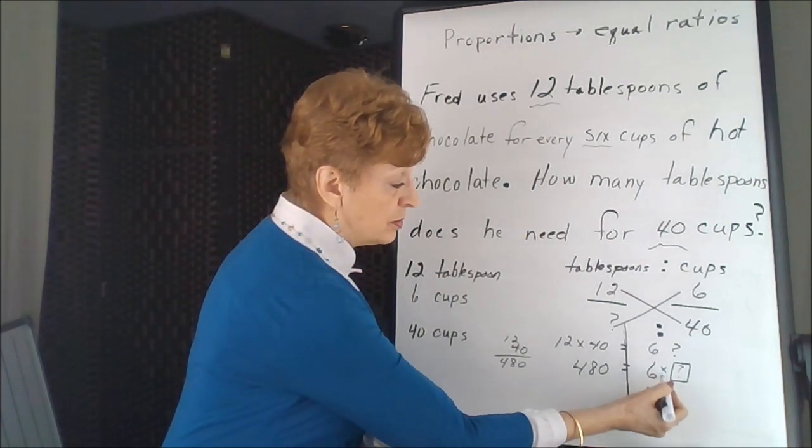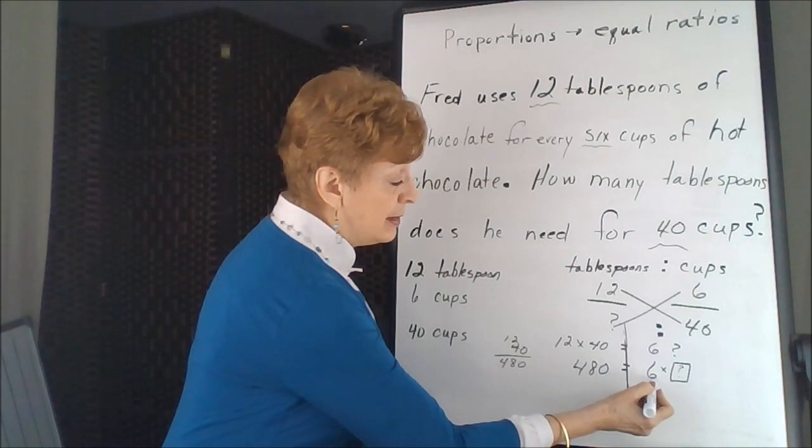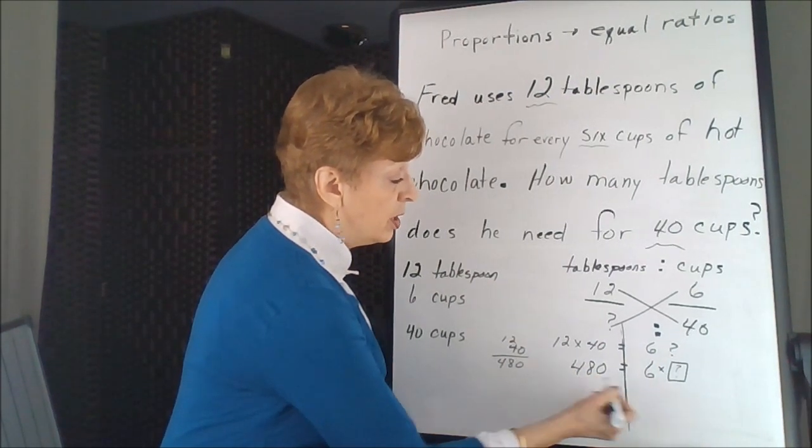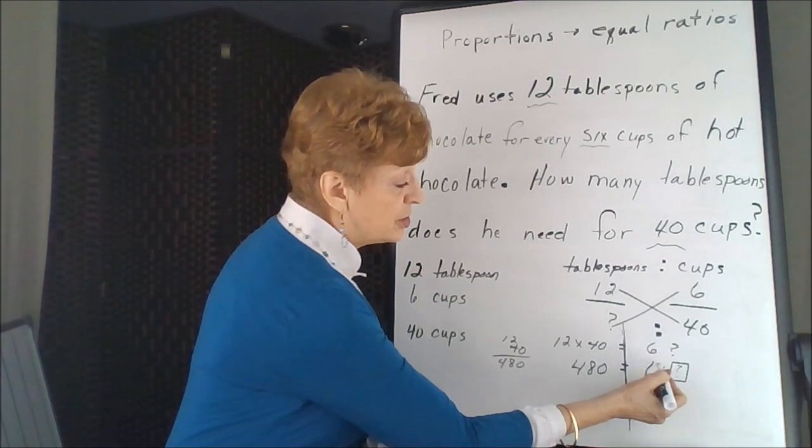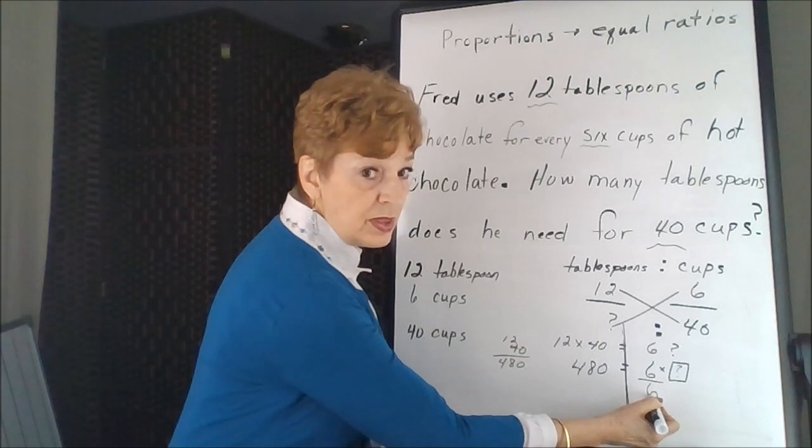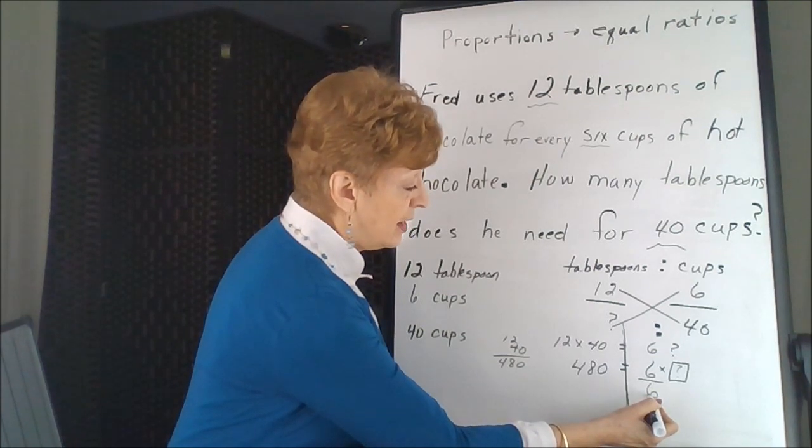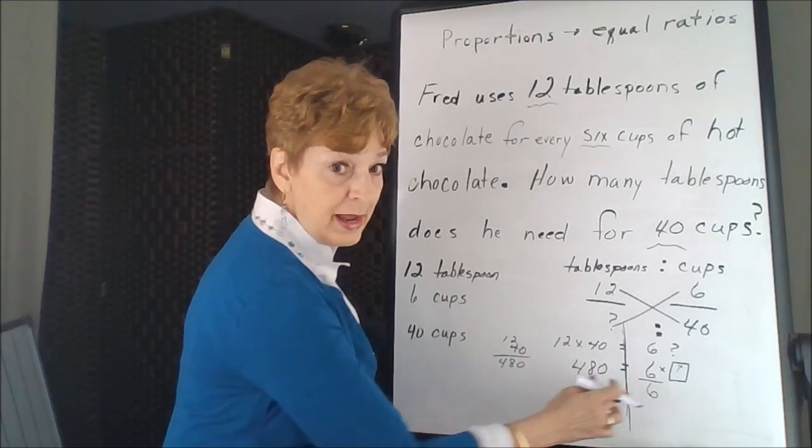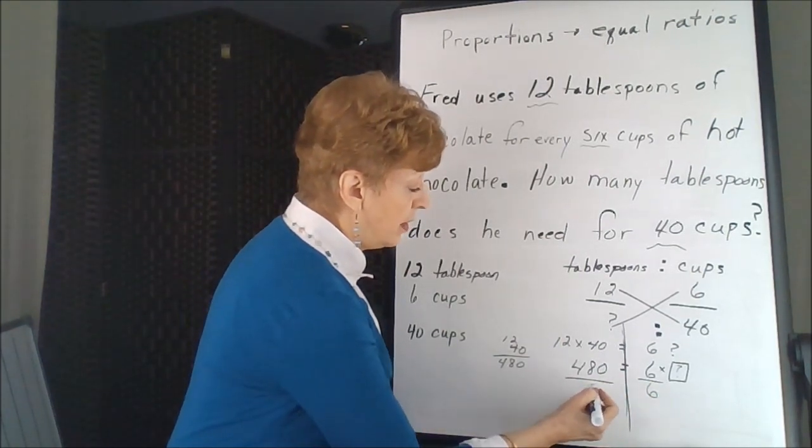This is a multiplication problem. So to make 6 jump over the wall to get over here with the other number, we're going to do the opposite calculation, which would be divide. We're going to divide by 6. This is the thing that neutralizes this side. But whatever we do to one side, we have to be fair and do to the other.